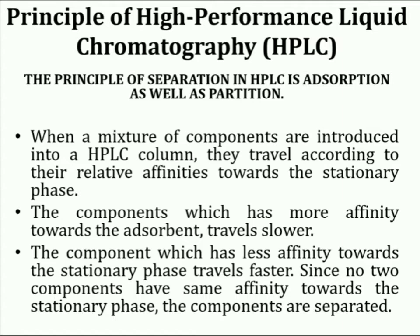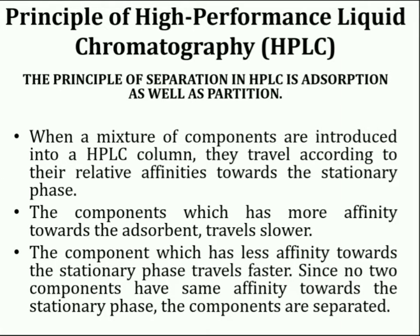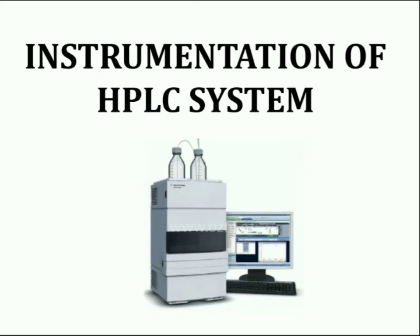When a mixture of components is introduced into an HPLC column, they travel according to their relative affinities towards the stationary phase. Affinity is the tendency of a chemical species to react with another to form a chemical compound — it denotes the degree to which a substance tends to combine with another. Compounds with more affinity towards the adsorbent travel slower, while compounds with less affinity towards the stationary phase travel faster. Since no two compounds have the same affinity towards the stationary phase, the components are separated.